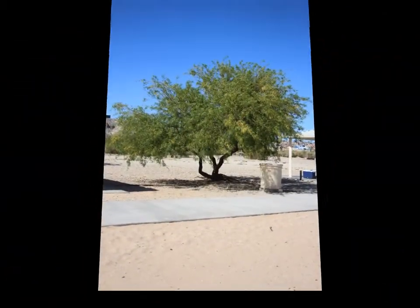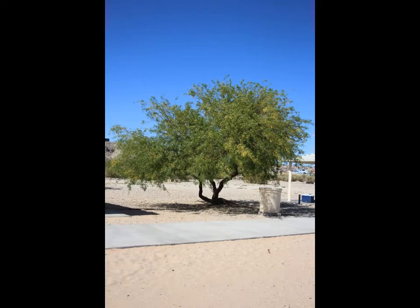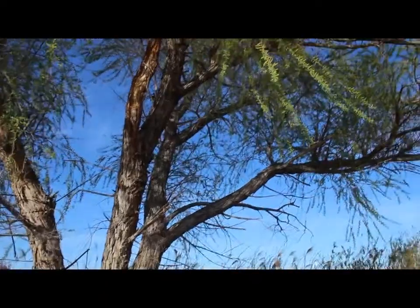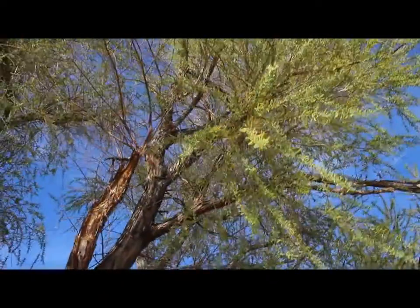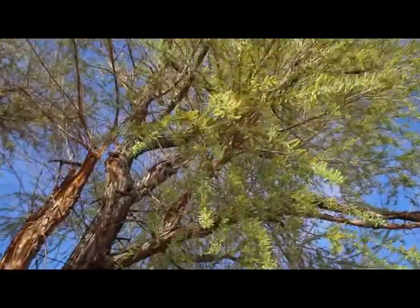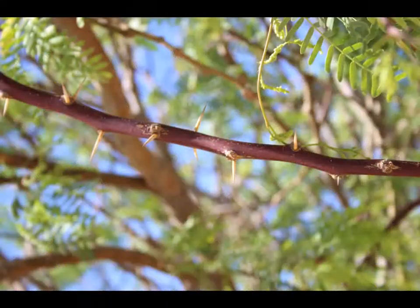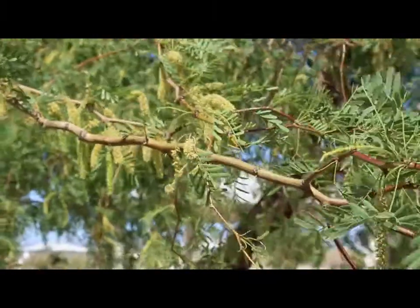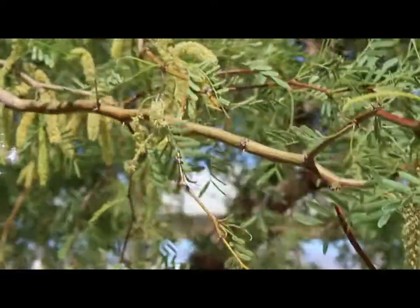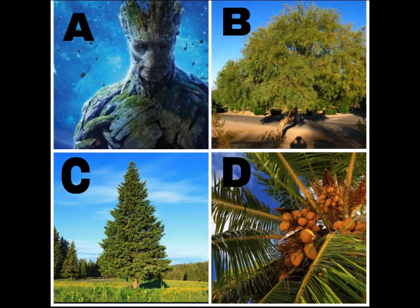And now we're on to the prosopis glandulosa, otherwise known as the honey mesquite tree. The honey mesquite can either be a shrub or grow to be 30 feet tall. Their branches contain thorns, and when the flowers blossom in the spring, they turn yellow. What are the characteristics of the honey mesquite tree, and is the tree pictured in A, B, C, or D? Take a minute and discuss how you can identify a honey mesquite tree.